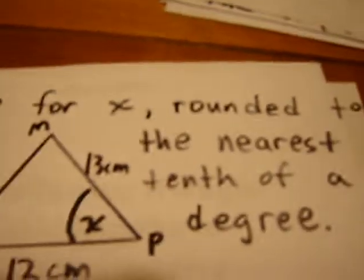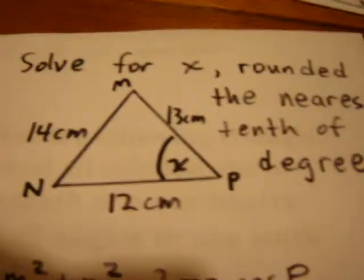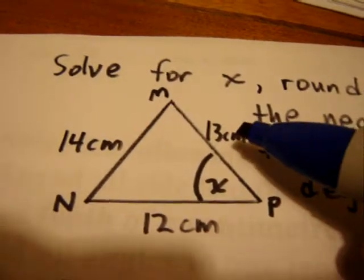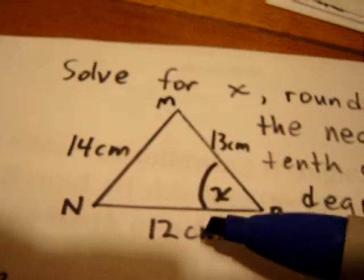Okay, now, the next question. We're going to solve for X rounded to the nearest tenth of a degree. And notice here, this is called side, side, side. We know all three sides.